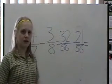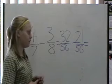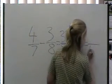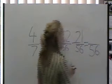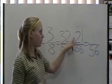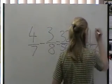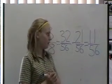Now just like I said in the other ones, we don't need to subtract the denominators because they are already the same. We just need to subtract the numerators. So our denominator will stay 56. But now we need to do 32 take away 21, which is 11. So our answer is 11 fifty-sixths.